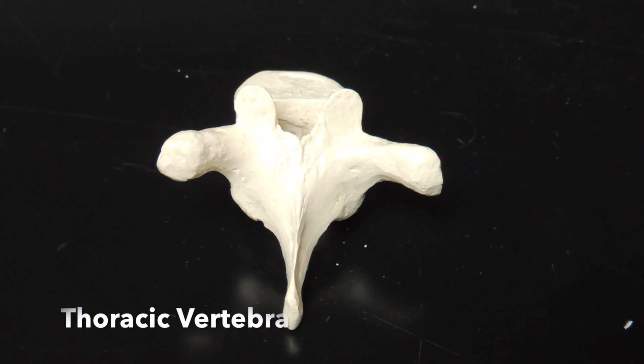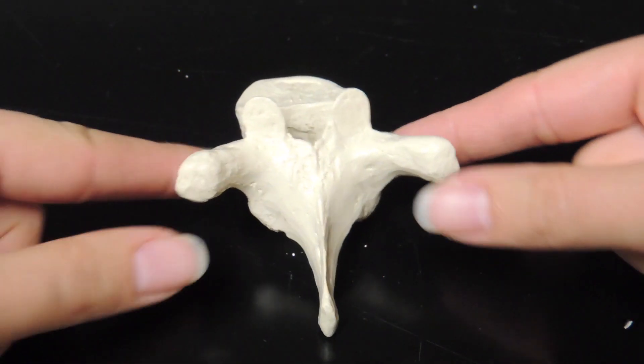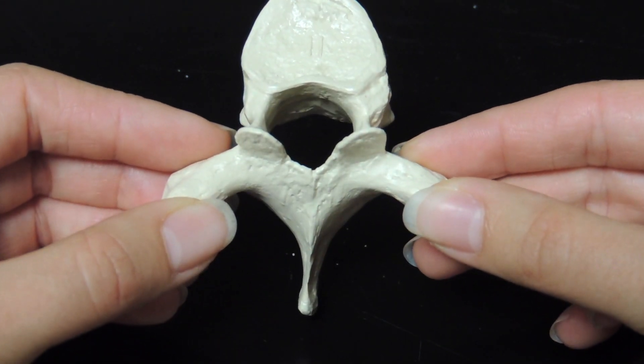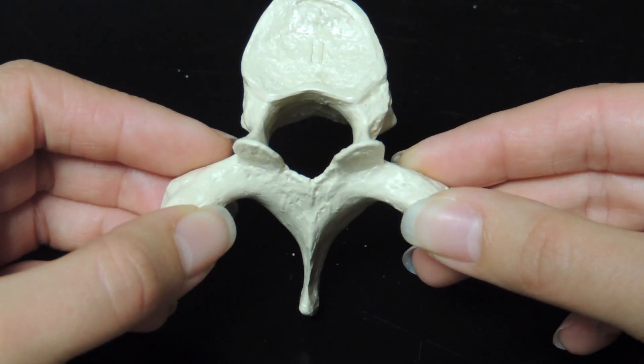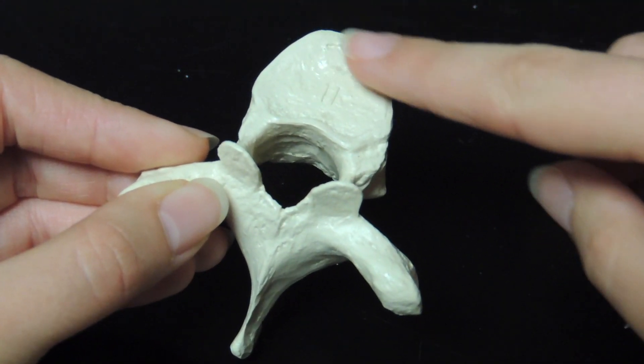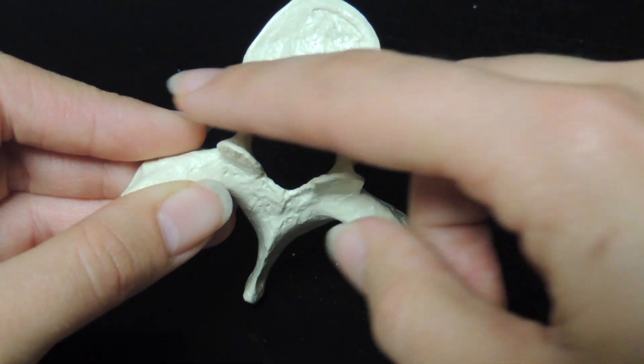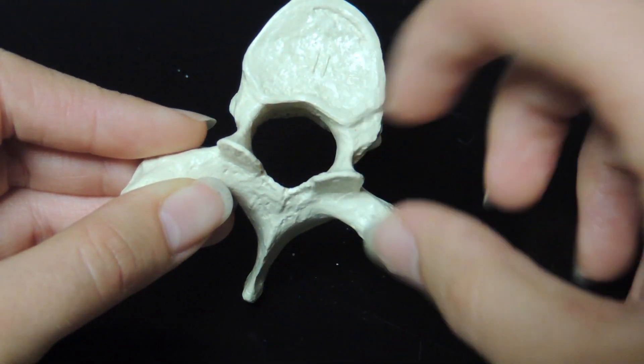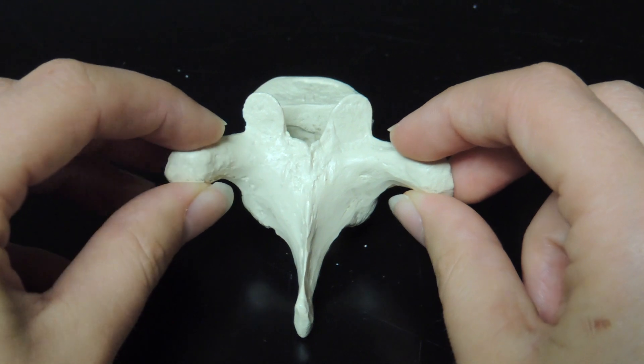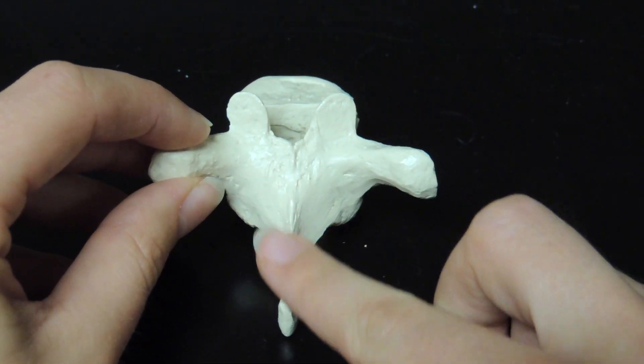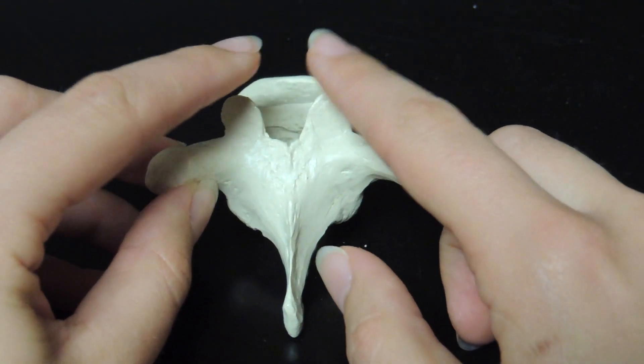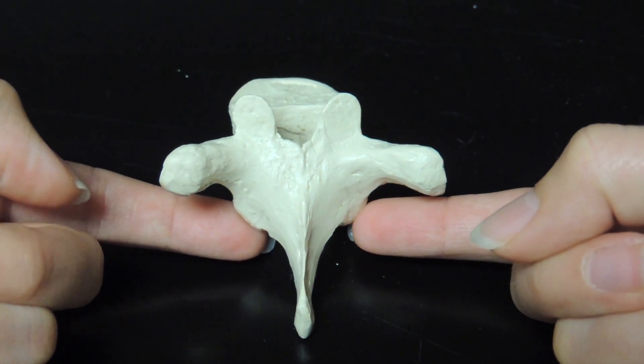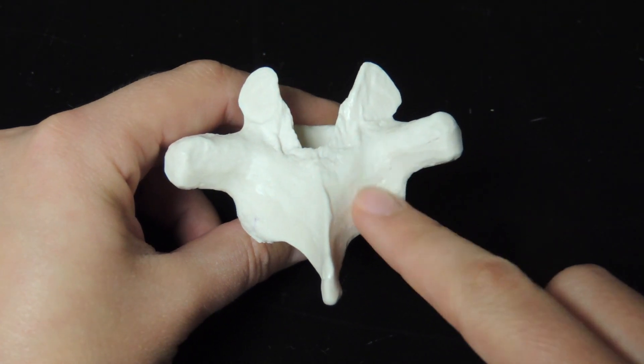Next, we have the thoracic vertebrae, the one that kind of looks like a giraffe. The thoracic vertebrae has all the same features as the cervical vertebrae, except for a few new ones. So we still have a body, two pedicles, a vertebral arch, a vertebral foramen, transverse processes, a spinous process, superior and inferior articulating facets, and lamina.